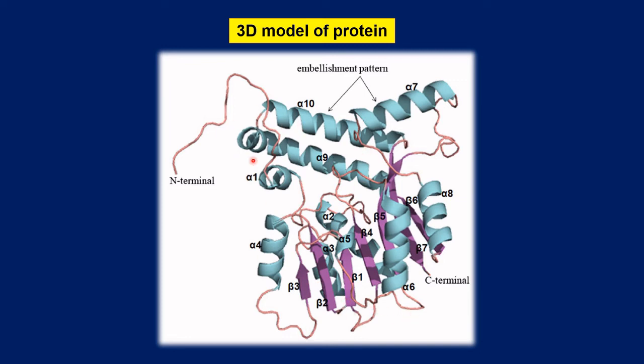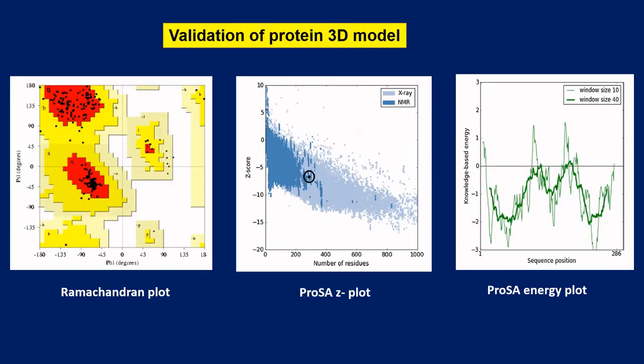It is having different alpha structures, alpha helices, beta sheets and loops, and it is also having an embellishment pattern which is unique to this family of methyl transferase proteins. After that I performed the validation of this protein model.